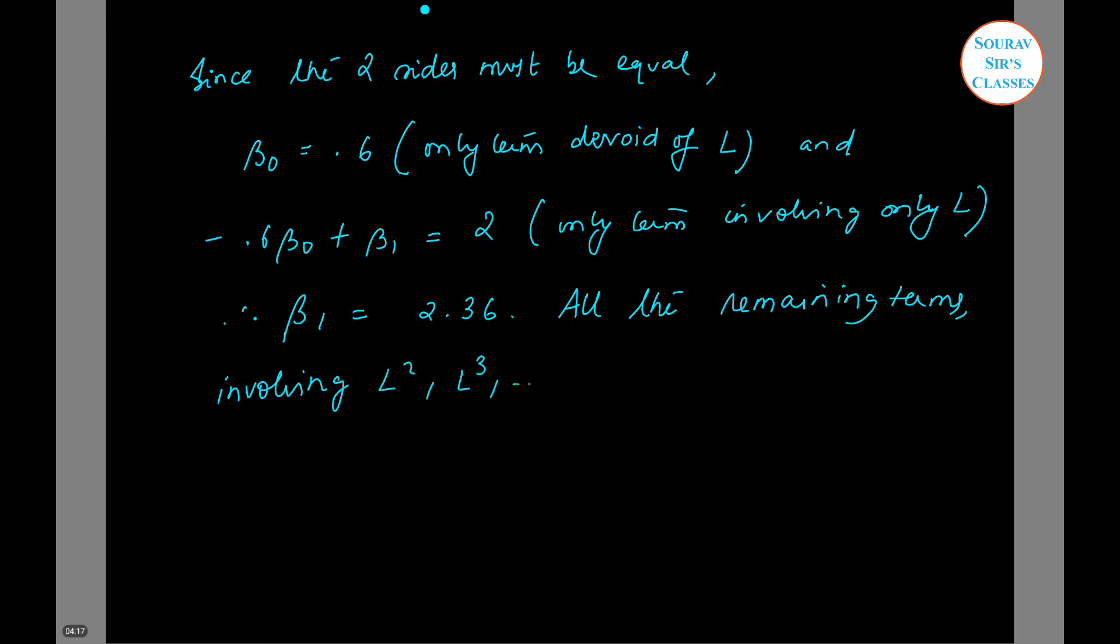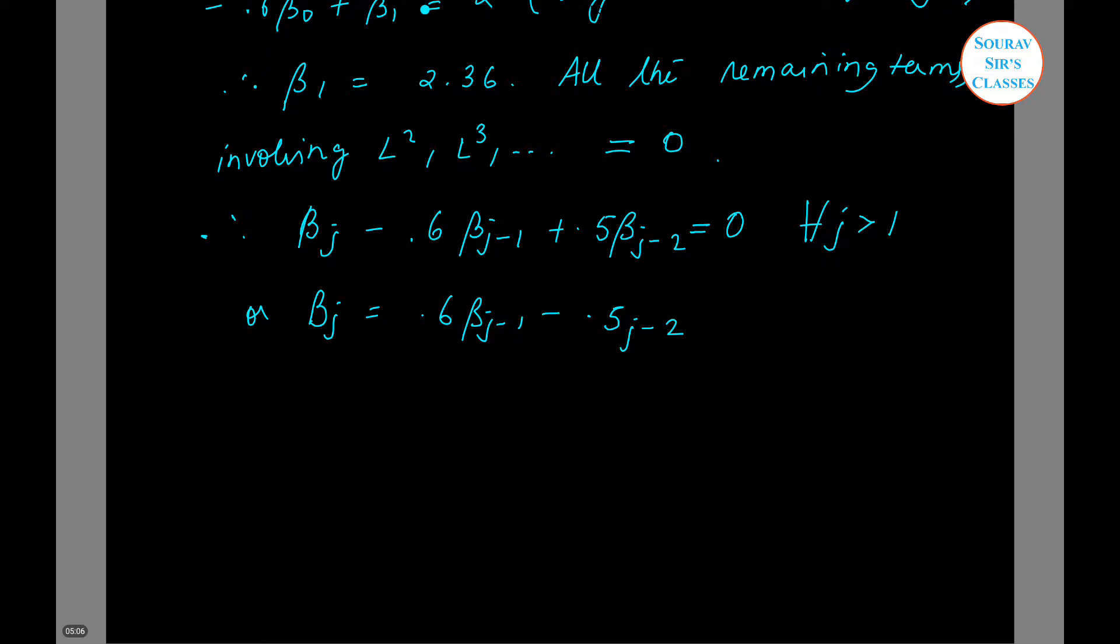Therefore Bj minus 0.6 beta j minus 1 plus 0.5 beta j minus 2 is equal to 0 for all J's that are greater than 1, or Bj itself is equal to 0.6 Bj minus 1 minus 0.5 j minus 2. This provides a recursion for all the remaining coefficients.